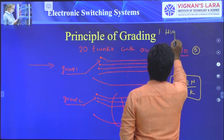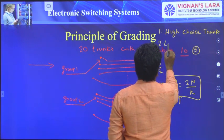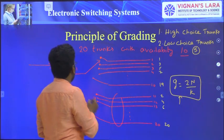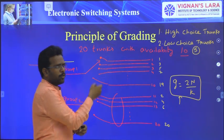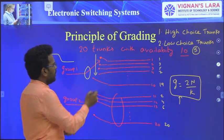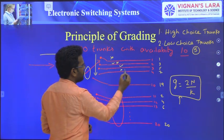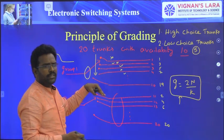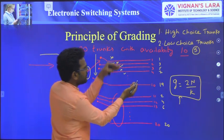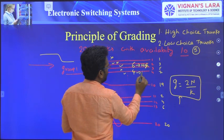We note two more points here: high choice trunks and low choice trunks. Whenever this incoming trunk wants to access any outlet in either group, this selector switch is going to start from the first. If it is busy, it goes to the next trunk, and so on. Before reaching the last choices, the first choices can establish the connection. So we call them high choice trunks and low choice trunks.